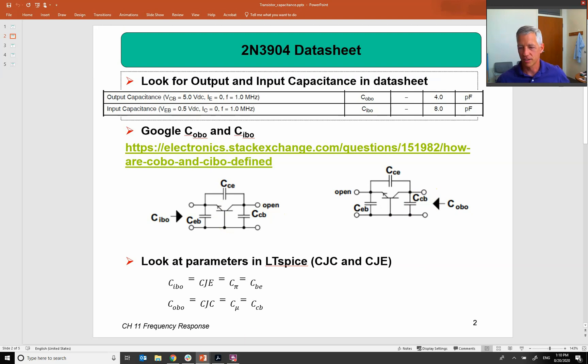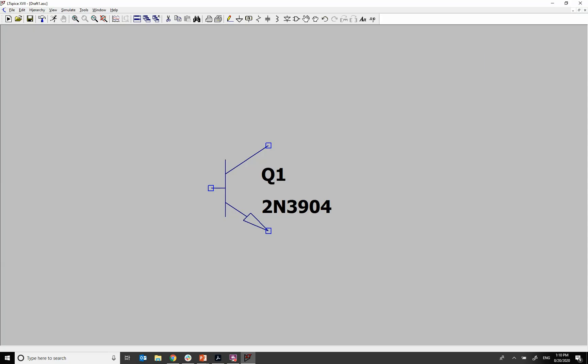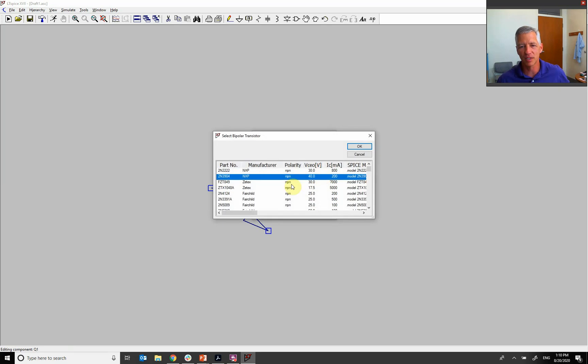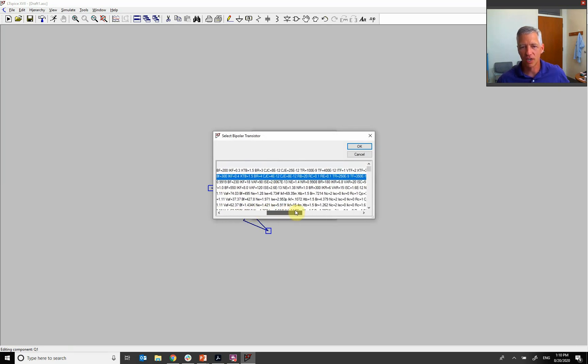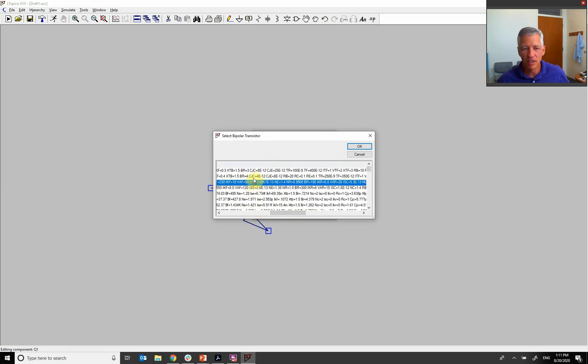Now we also want to look at what LTSpice does for these NPN transistors. So if I click here and do pick new transistor, I can scroll over and look at the parameters. And you can see right here is a CJC, the junction capacitor connected to my collector. And then we also have a CJE, which is my junction capacitor connected to my emitter.